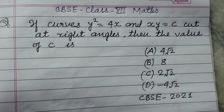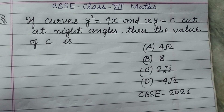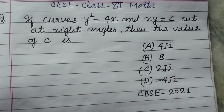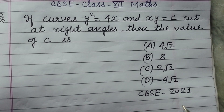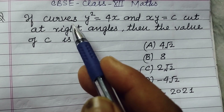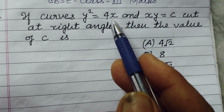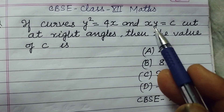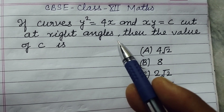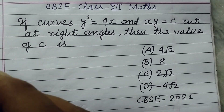Hello students, warm welcome to this YouTube channel. Question from CVSC class 12, 2021 board exam: if curves y² = 4x and xy = c cut at right angle, then the value of c is.